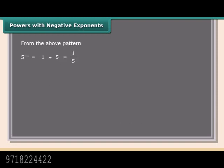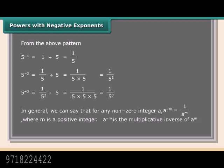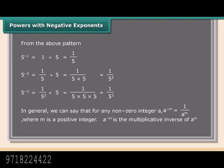From the above pattern: 5 raised to the power minus 1 equals 1 divided by 5, which is 1 upon 5. 5 raised to the power minus 2 equals 1 upon 5 divided by 5, which equals 1 upon 5 into 5, which equals 1 upon 5 squared. 5 raised to the power minus 3 equals 1 upon 5 squared divided by 5, which equals 1 upon 5 cubed. In general, for any non-zero integer A, A raised to the power minus M equals 1 upon A raised to the power M, where M is a positive integer.